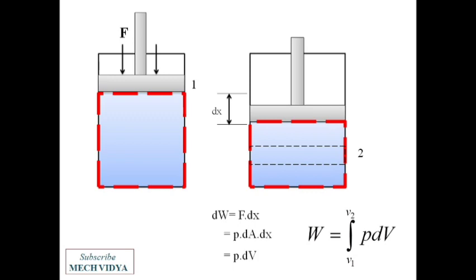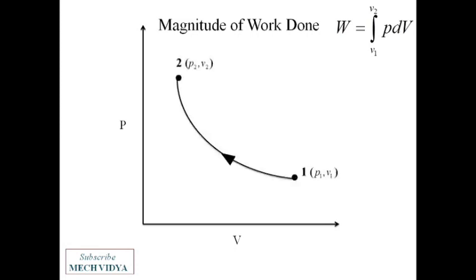This work can be computed mathematically as well as graphically. If we plot a pressure versus volume curve of the compression process that we have discussed, it will look like this. The area below this curve gives the magnitude of the total work done.